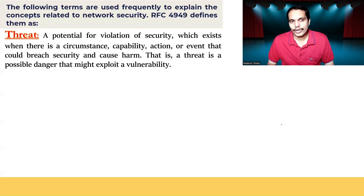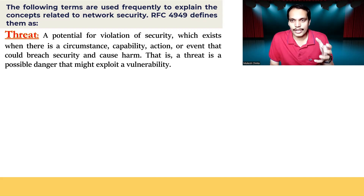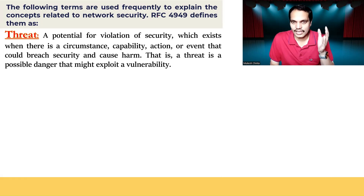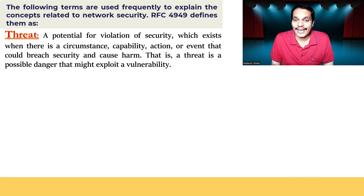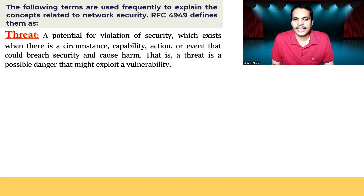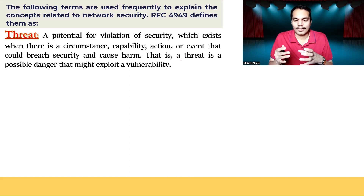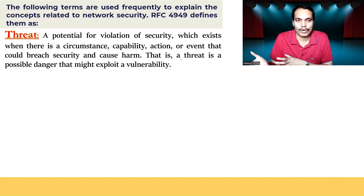In addition to these three terms, RFC 4949 provides additional terms frequently used to explain concepts related to network security. The first is threat. A threat can be explained as a potential for violation of security that exists when there is a circumstance, capability, action, or event that could breach security and cause harm. A threat is a possible danger that might exploit a vulnerability — it may or may not happen, but the possibility always exists.